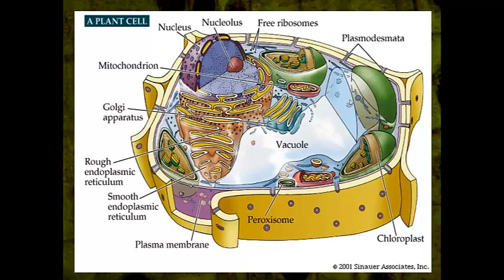Another thing plant cells have that animal cells do not is the chloroplast. We will be very involved with the chloroplast when we learn about photosynthesis — that's where it all happens. Plants also have mitochondria; all cells should have mitochondria because it helps power the cell. But only plant cells will have the chloroplast, and as you can see, there are a lot of them in there.